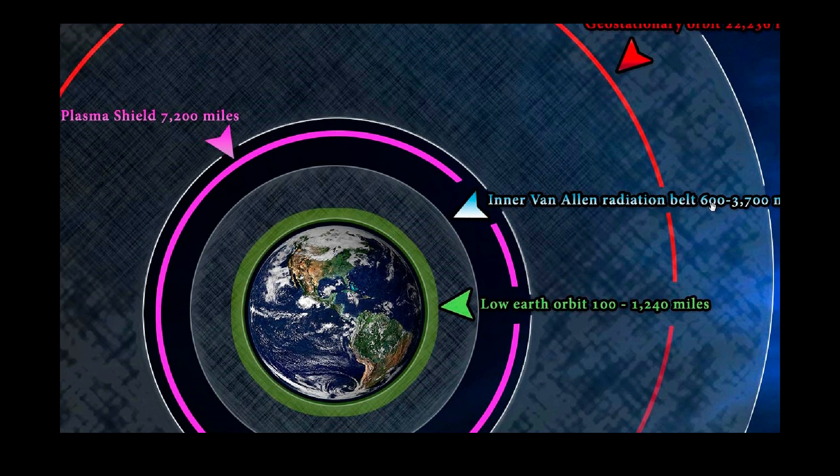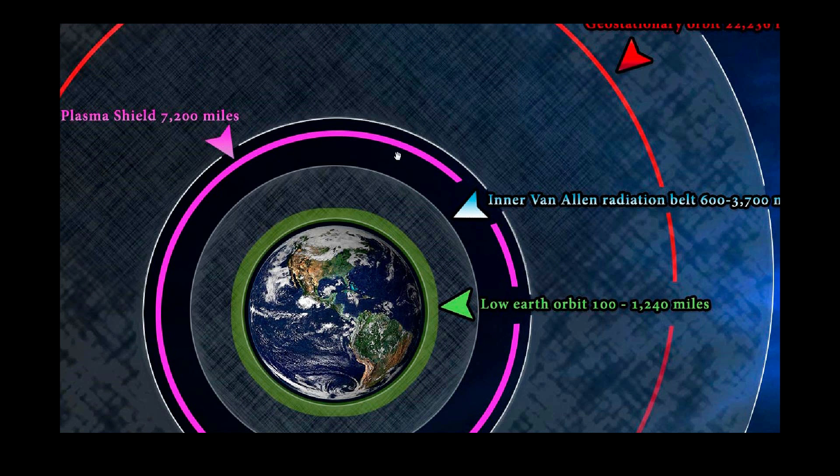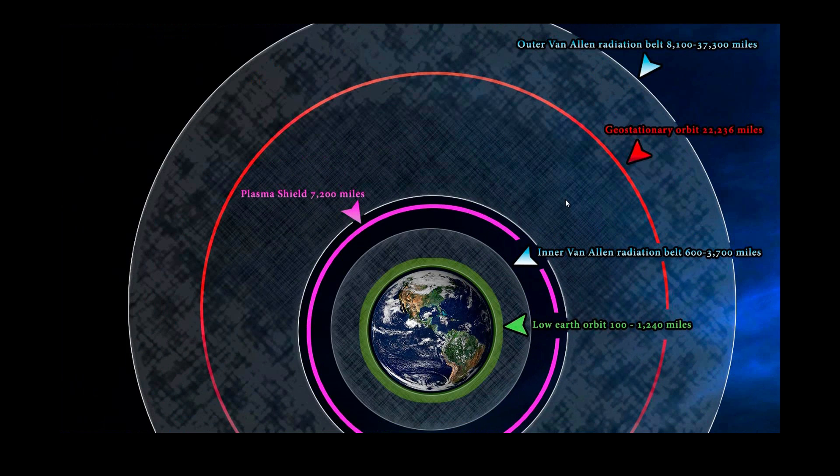The inner Van Allen belt, which is this area here, goes from 600 miles out to 3,700 miles. And then we get to the new MIT discovery, which is this pink band. And this is the glass wall, the hard and fast boundary at 7,200 miles. And this is plasma as well. Then we get to the outer Van Allen belt, which is all this area. And that stretches from 8,100 miles up to 37,300 miles.